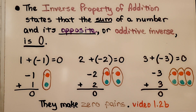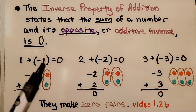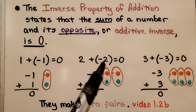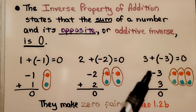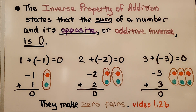The inverse property of addition states that the sum of a number and its opposite, or additive inverse, is zero. Positive one plus negative one is equal to zero. Positive two plus negative two is equal to zero. Positive three plus negative three is equal to zero. So they make zero pairs.